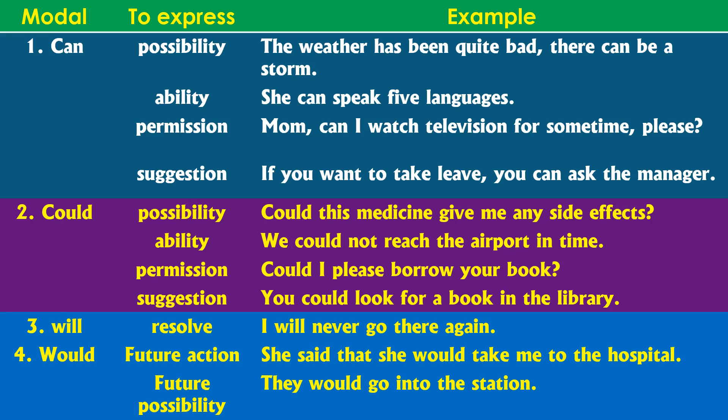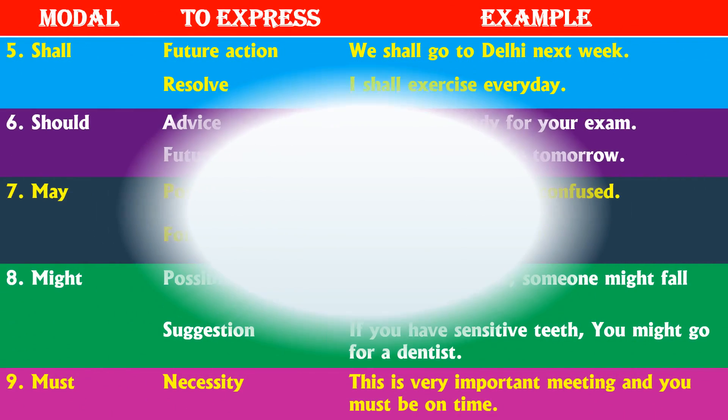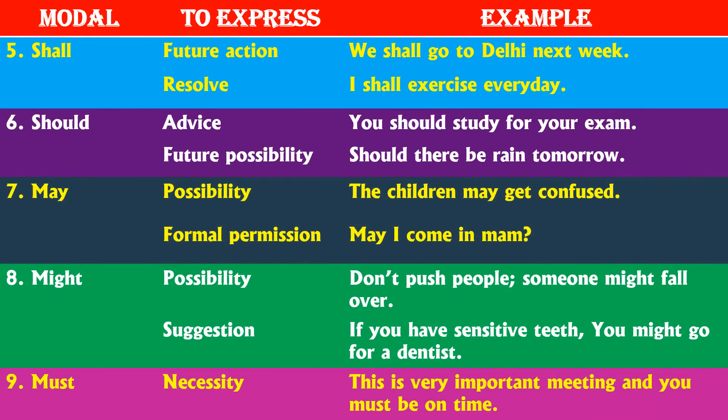The modal 'would' is used for future action and future possibility. For future action: 'She said that she would take me to the hospital.' For future possibility: 'They would go into the station.' Next is 'shall,' which expresses future action and resolve, similar in meaning to 'will.' Examples: 'We shall go on holiday next week' and 'I shall exercise every day.' So 'shall' is used for strong intention or future plans.